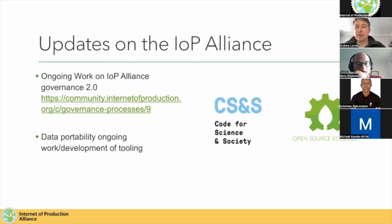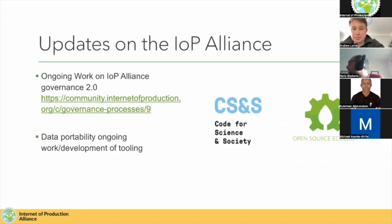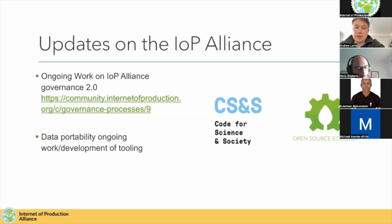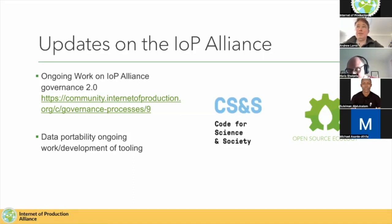If you're interested in being part of governance discussions, we have a governance task force and research work starting under that project. This is really about the governance not just of the Alliance but of the internet of production. We're also continuing work from the Next Generation Internet initiative of the European Union, through our friends and partners Open Source Ecology Germany. Their team has been working on tooling for designs and documentation portability — enabling the portability of the documentation you need to make things, rather than being locked into any particular vendor's software ecosystem. Max and his colleagues have been working on that quite a lot.